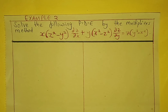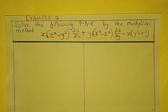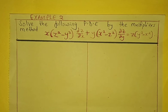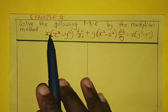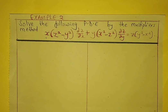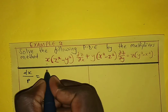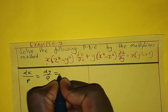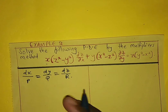Hello learners, this is example number two involving solving a partial differential equation using the multiplier method. The question is: solve the following partial differential equation by the multiplier method. The first step is to express this equation in auxiliary form: dx over P equals dy over Q equals dz over R.